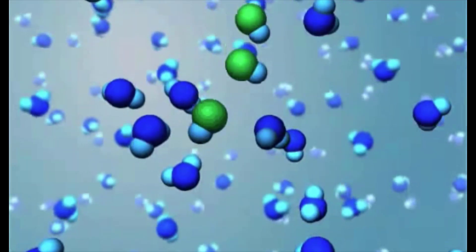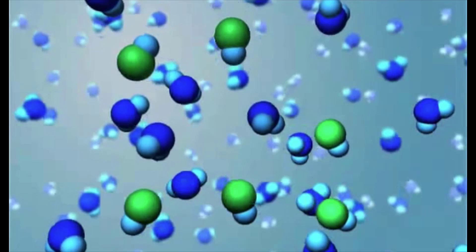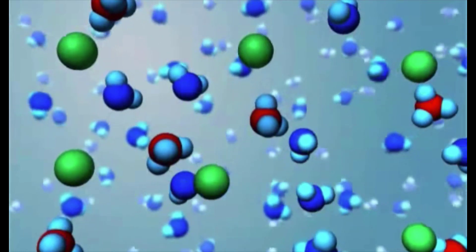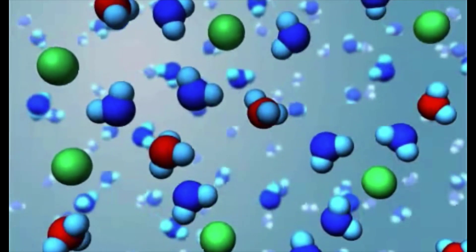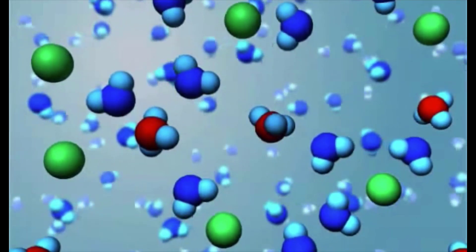Let's look at what happens in solution as you add a strong acid to water. Notice how every green HA molecule loses a proton by transferring it to a blue H2O molecule, forming a red hydronium ion.